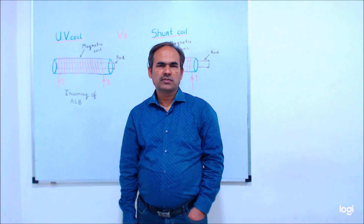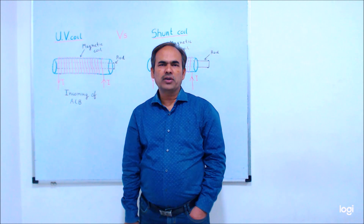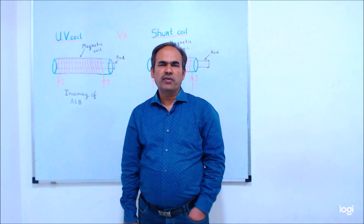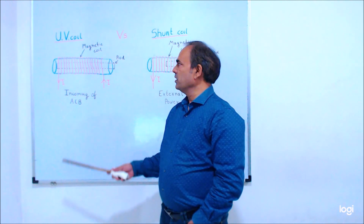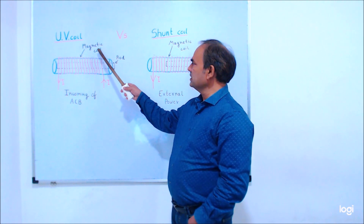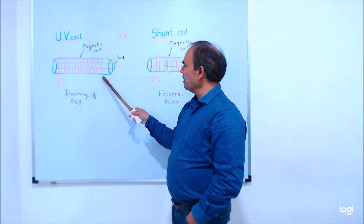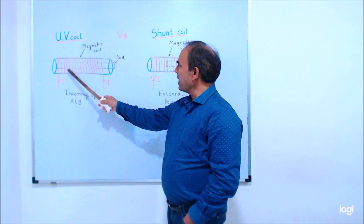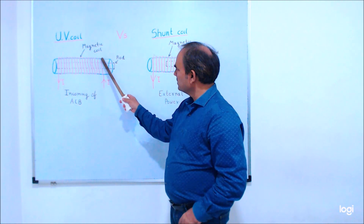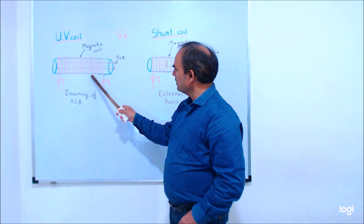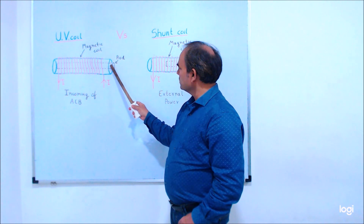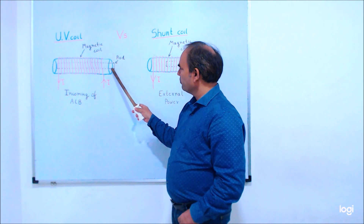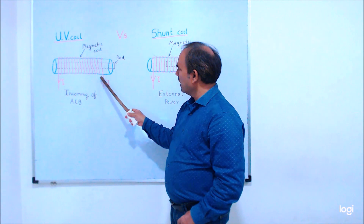Hello friends, welcome back to my YouTube channel. Today we will learn about the difference between UV coil and shunt coil. Here we can see the diagram of the UV coil — this is a magnetic coil. This red line you can see represents the magnetic coil, and here is one rod, a metallic rod.